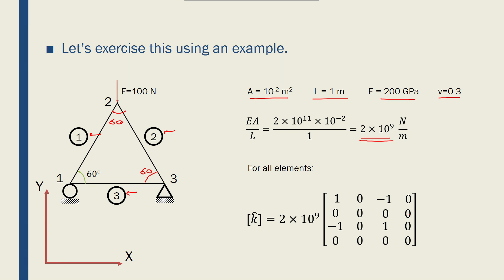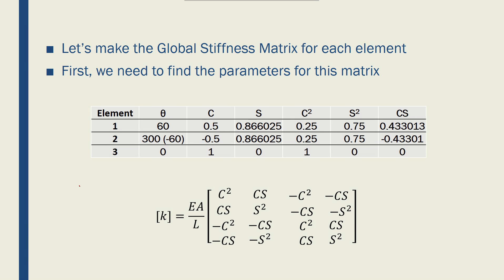We also know that for a single element, the local coordinate system always gives us 2×10⁹ — which is EA/L — and a 4×4 local stiffness matrix. The global stiffness matrix is shown in red. So let's find the global stiffness matrix for each element. We have three elements.